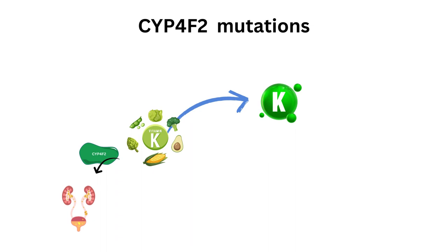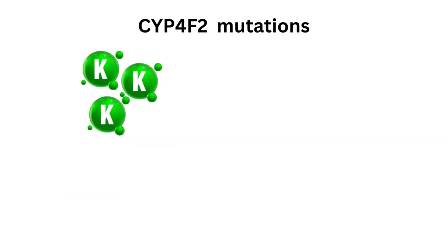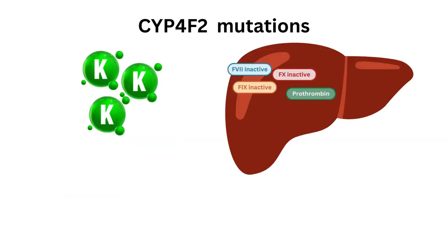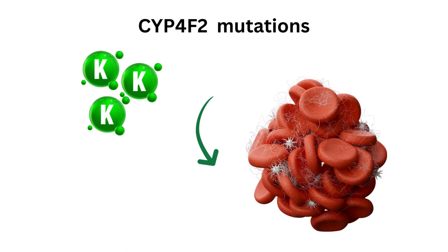Certain variations in CYP4F2, especially the star 3 allele, are associated with a reduced activity of the resulting enzyme. Reduced activity of CYP4F2 may help conserve vitamin K in the liver by slowing its hepatic metabolism. Since more vitamin K will be available, there is more cofactor to activate clotting factors, hence stimulating the production of blood clots — meaning a stronger coagulant response. The dosage of drugs that influence coagulation must be adjusted for that.